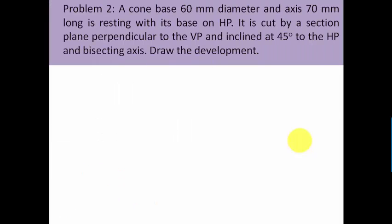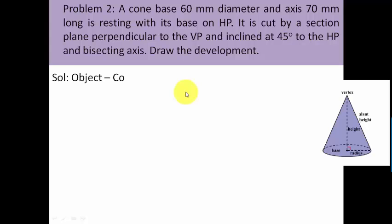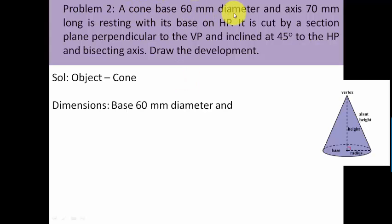The problem goes like this: a cone with base 60 mm diameter and axis 70 mm long is resting with its base on HP. It is cut by a section plane perpendicular to the VP and inclined at 45 degrees to the HP and bisecting the axis. Draw the development.